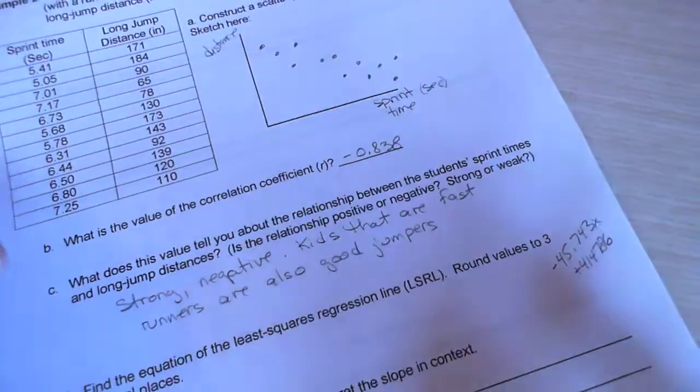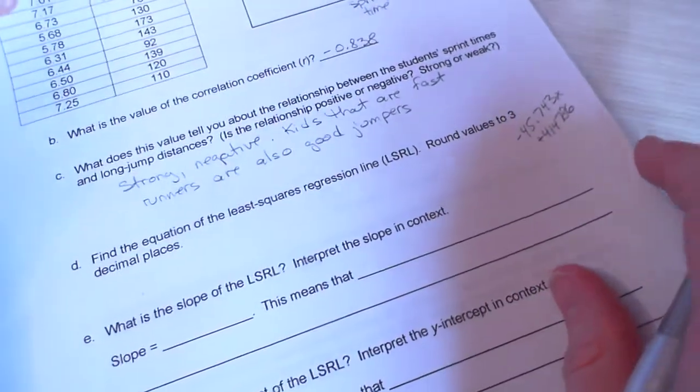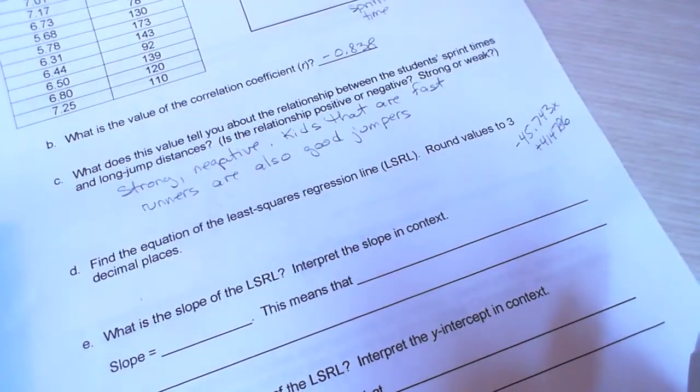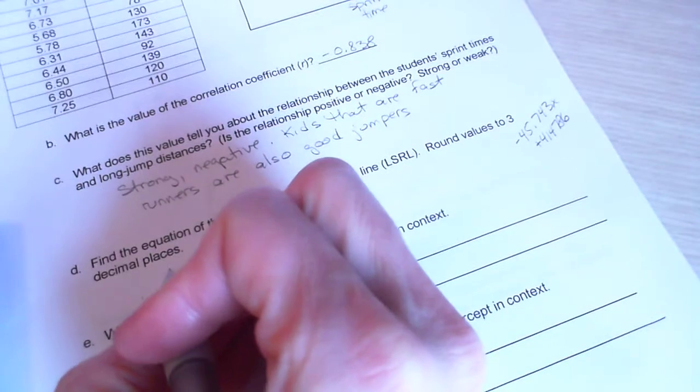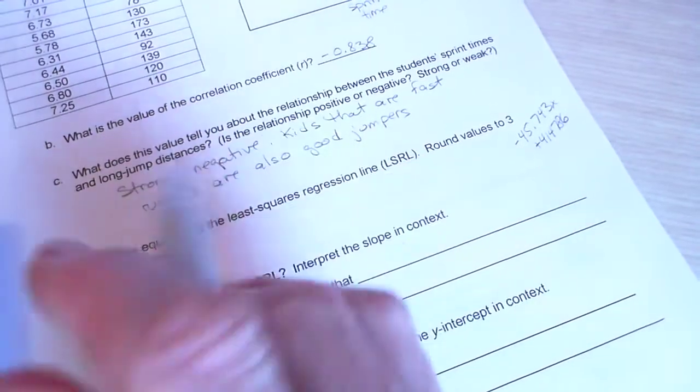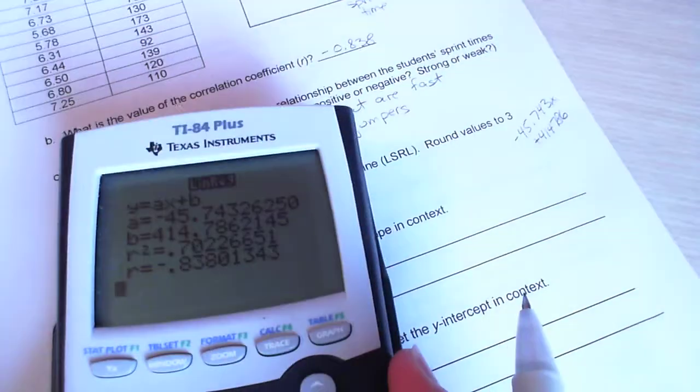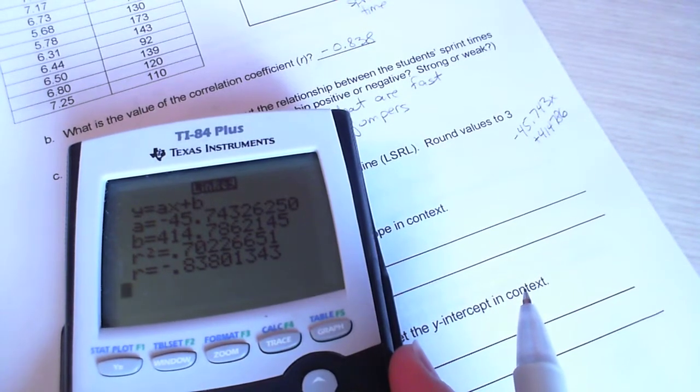Okay, then part D says, find the equation for the least square regression line, round to three decimal places. So I jotted down my A and B over here. And I can also get them off my calculator. There they are. A is negative 45.743, B is 414.786.